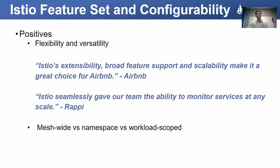There are definitely some clear benefits and upsides to this broad feature set and configurability. For one thing, it makes Istio versatile and adaptable to various cloud environments. Organizations using distributed platforms like Kubernetes have vast and complex needs, and Istio's broad feature set enables it to meet those needs. Having multiple avenues of configuration gives flexibility in terms of how operators go about fine-tuning their mesh — allowing mesh-wide settings while using custom resources or annotations to tweak settings at a more granular namespace or workload level.